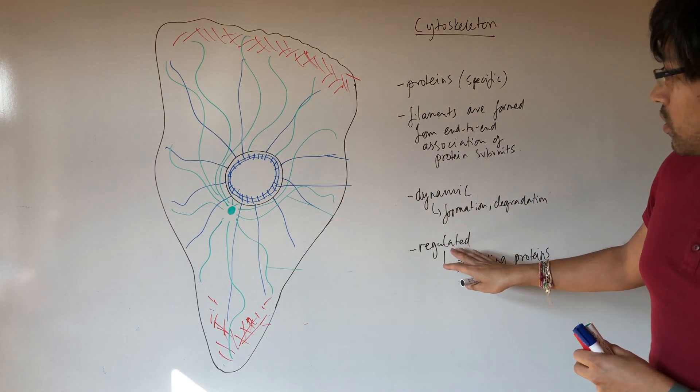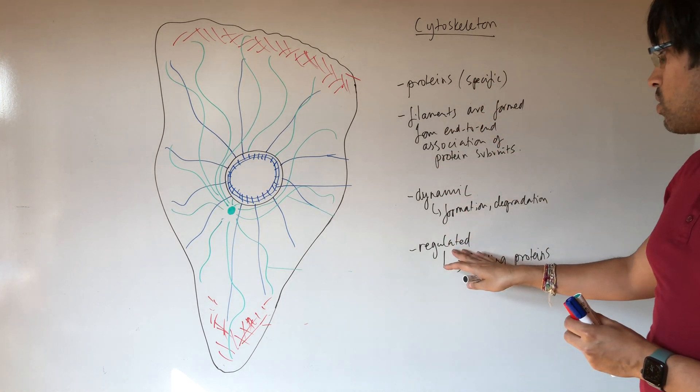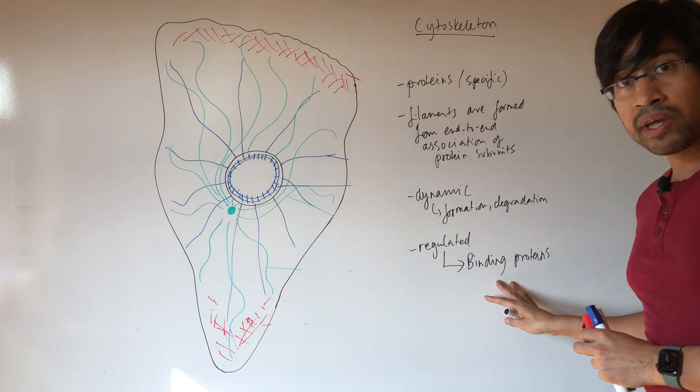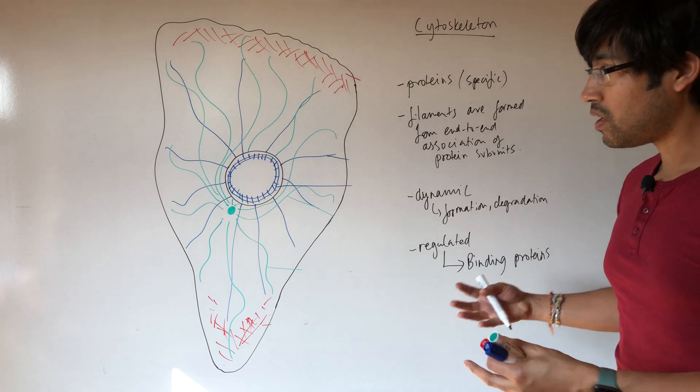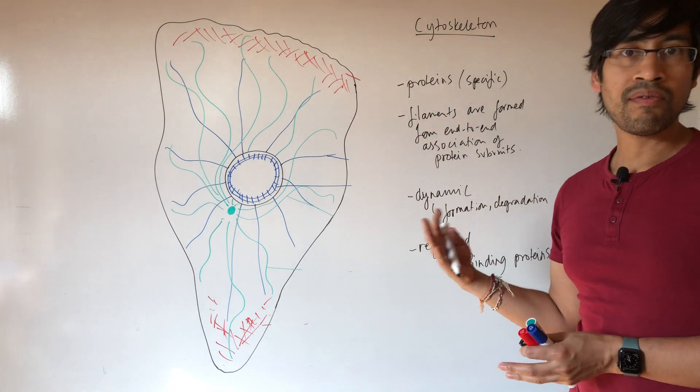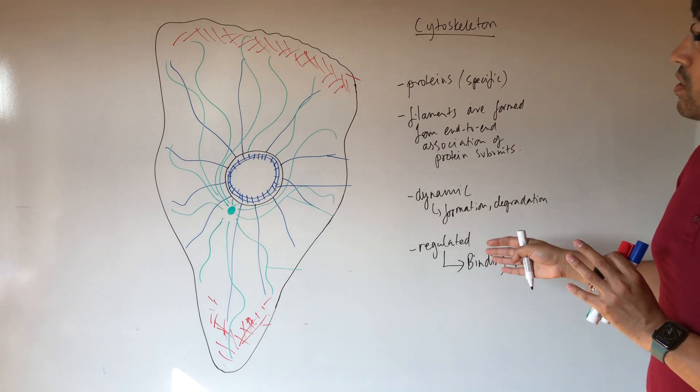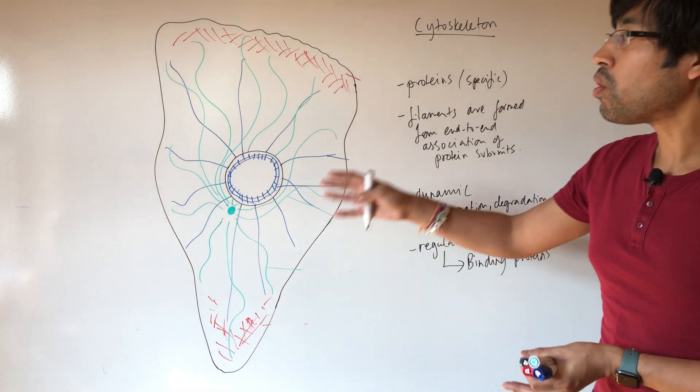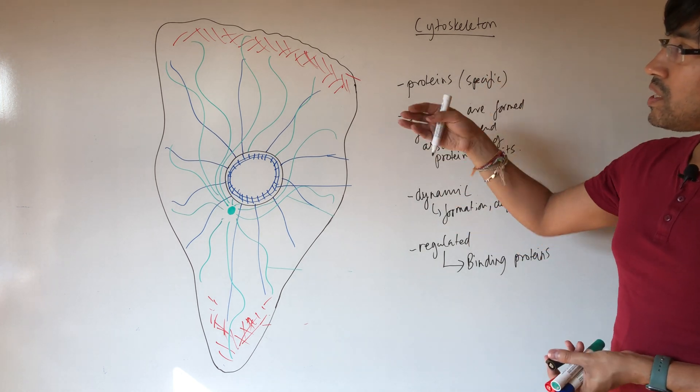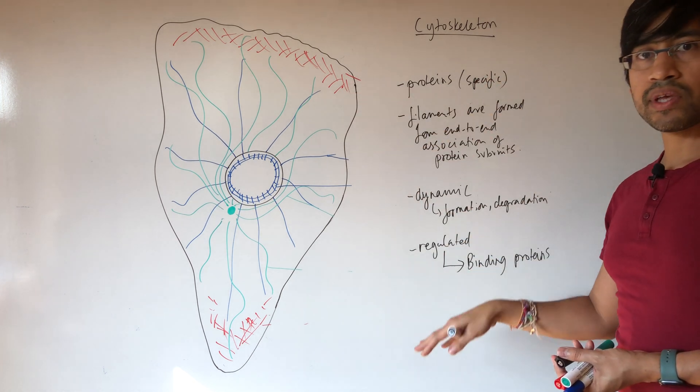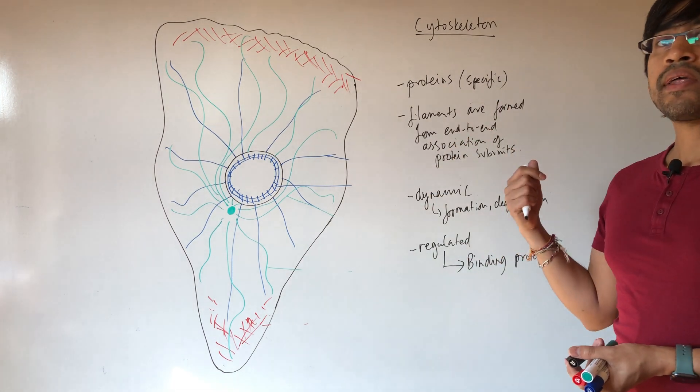So the ability of these cytoskeletal networks to be regulated occurs through the presence of these binding proteins, the binding proteins being affected by various signaling events that are happening in the cell. So those are the key things that are common to all of the cytoskeletal elements. So now let us look in turn in detail at the different cytoskeletal components in terms of their structure and their function.